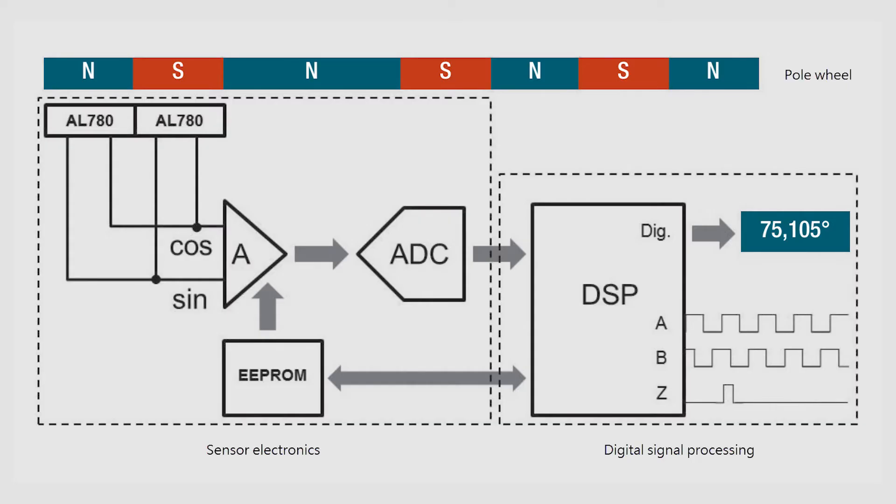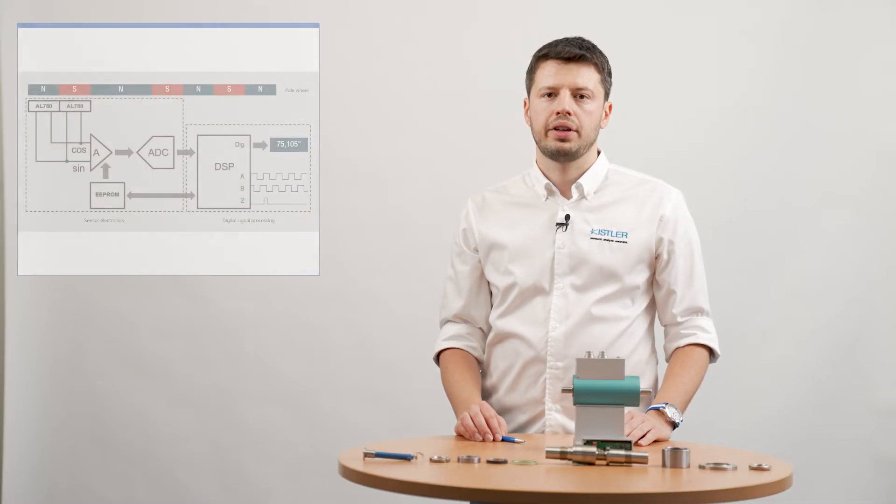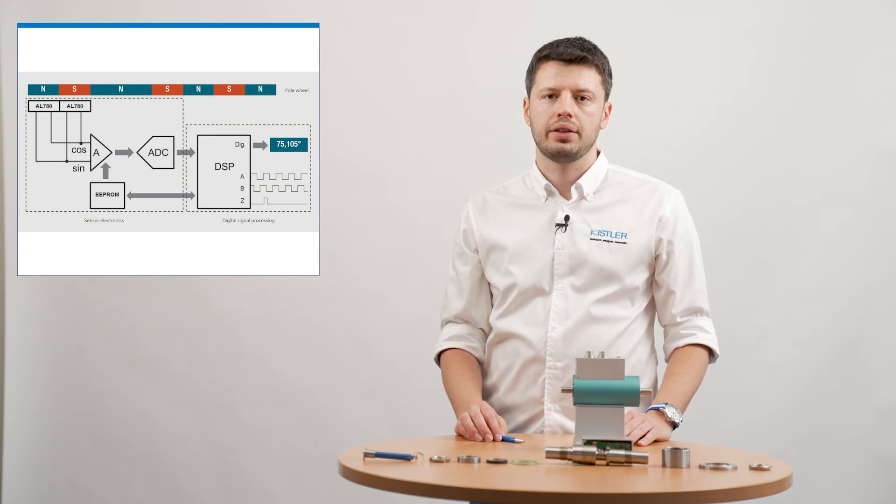The magnet wheel has north and south poles distributed around the circumference with a fixed width. The two sensors on the sensor board are aligned at a defined distance and detect the alternating north and south poles.